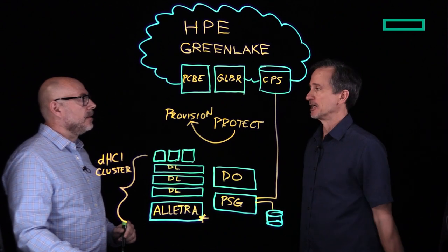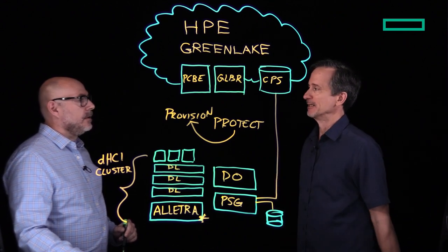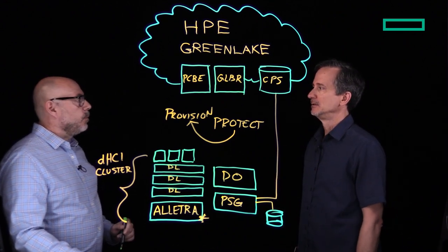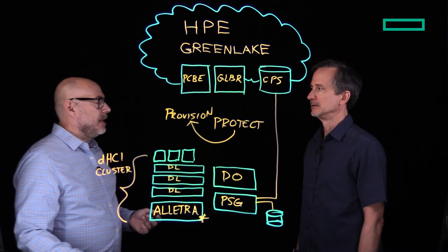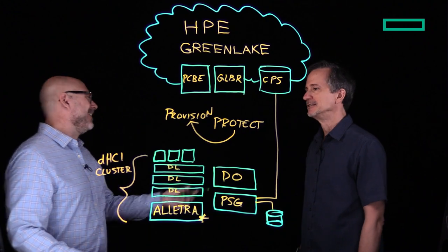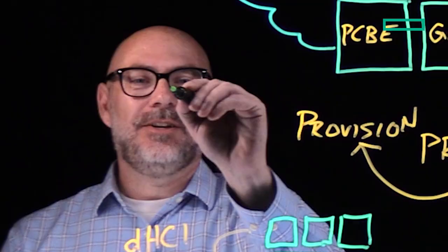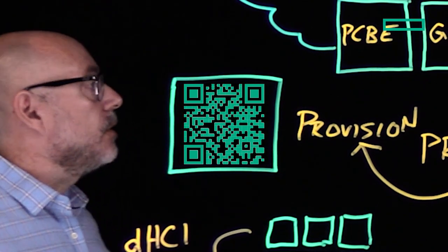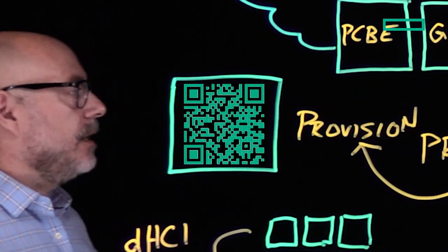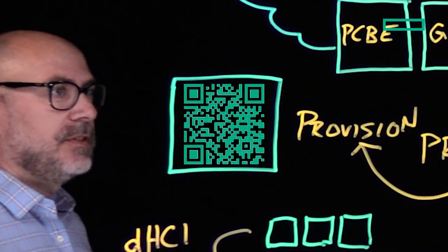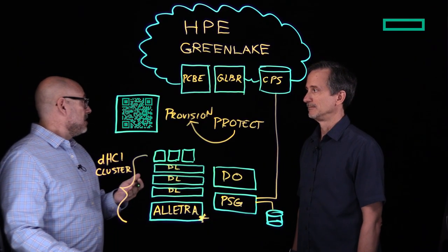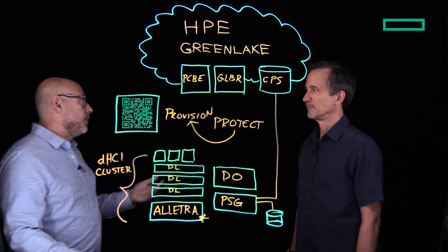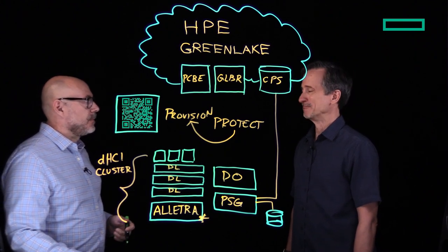I think that'll work great for John. Where should I point him for more information? The place I'd send him would be to go to the website, greenlake.hpe.com. We'll put a little QR code here for easy reference. Go to that website and you'll be able to find information about each of the respective services, get some free demonstrations and trial licenses, as well as connect to HPE sales if you want to take it to the next step.